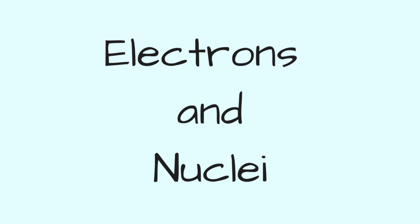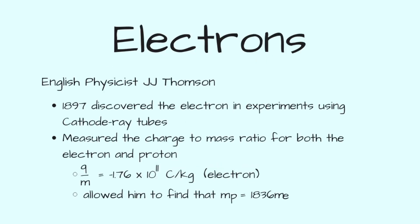Welcome. In this video, we are going to take a brief look at the discoveries of electrons and nuclei. In 1897, English physicist J.J. Thomson discovered the electron in experiments using cathode ray tubes.